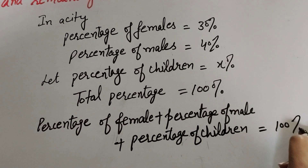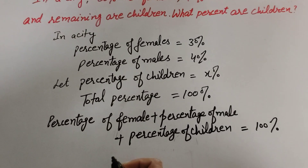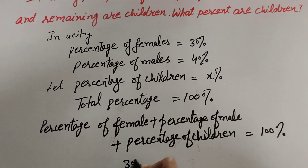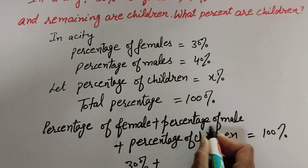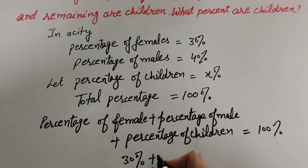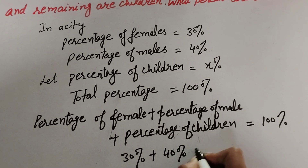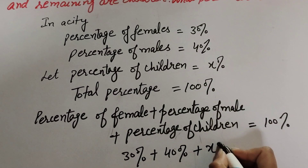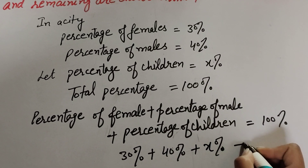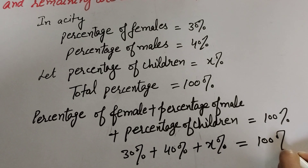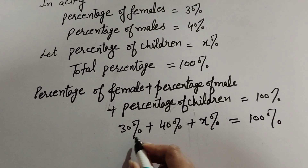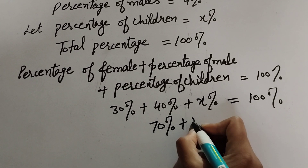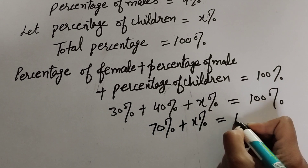This is equal to 100 percent. Percentage of female is given as 30 percent, percentage of male is given as 40 percent, plus percentage of children which we suppose is x percent. So: 30 percent plus 40 percent equals 70 percent, plus x percent equals 100 percent.